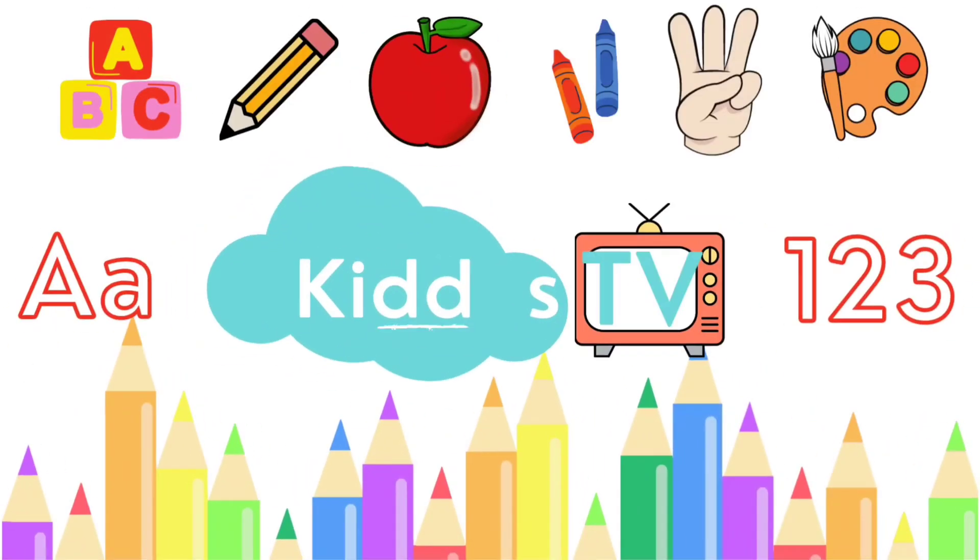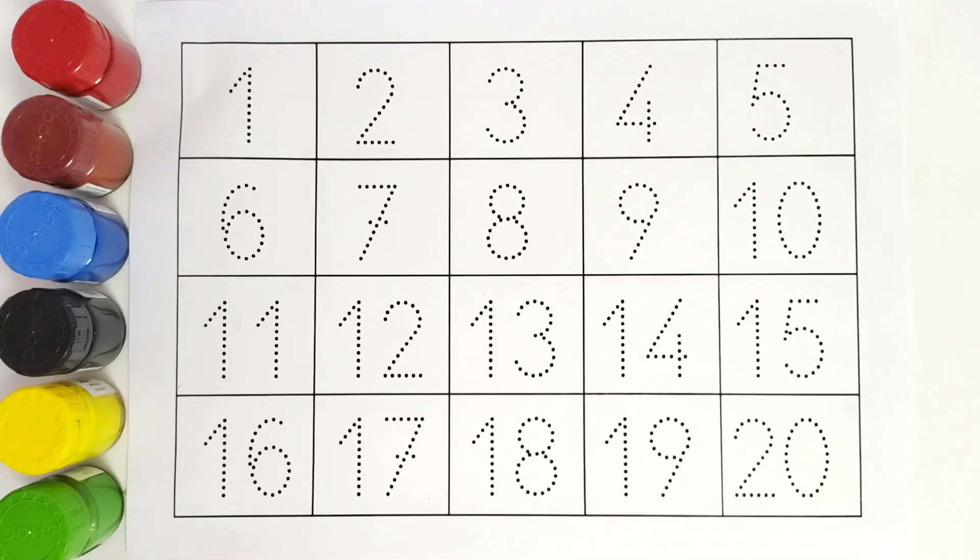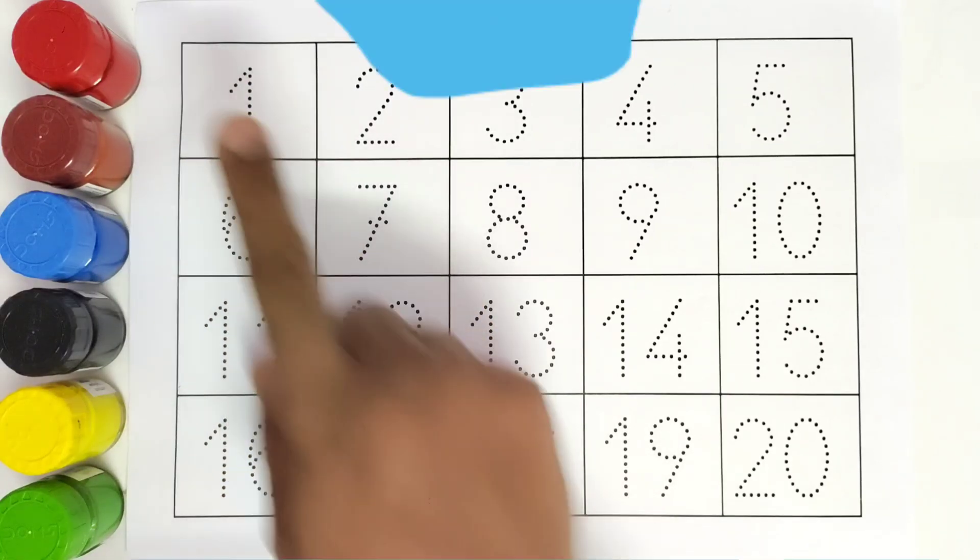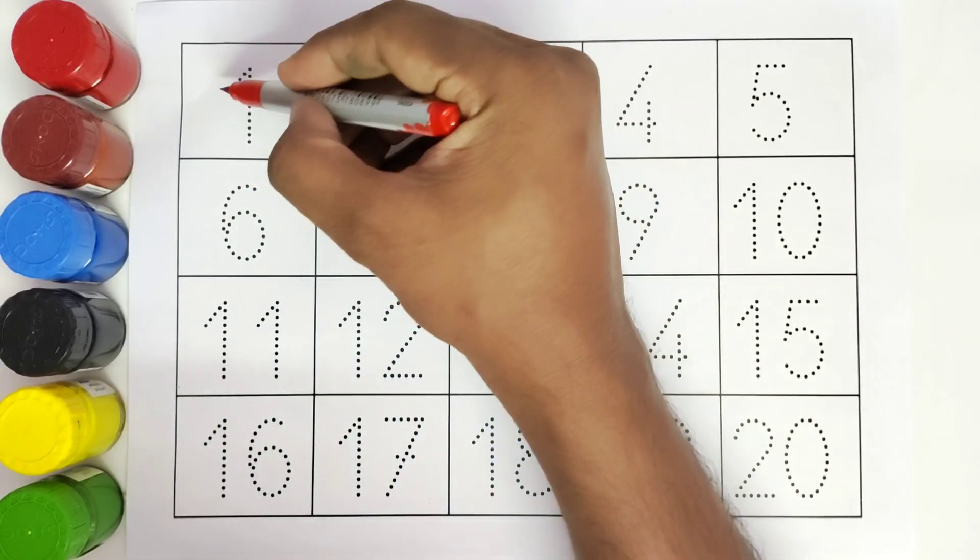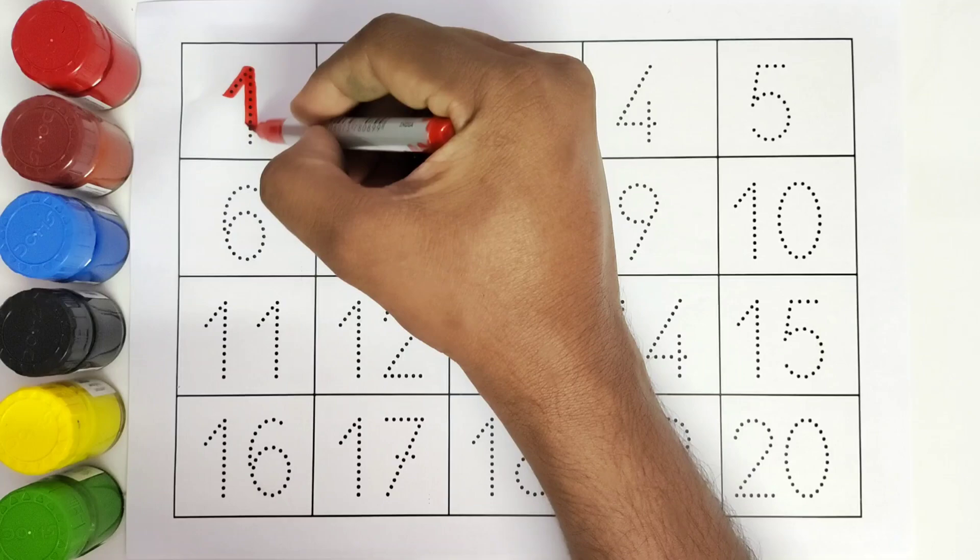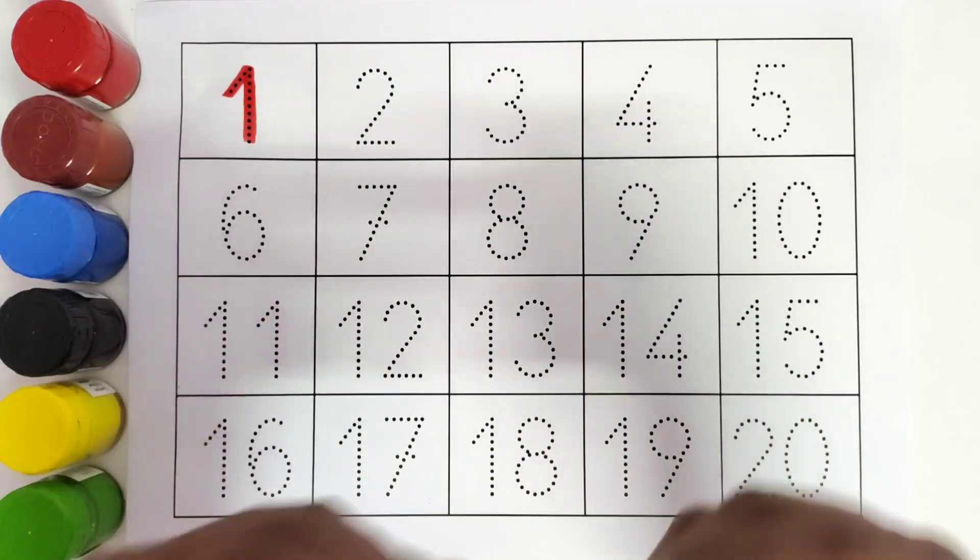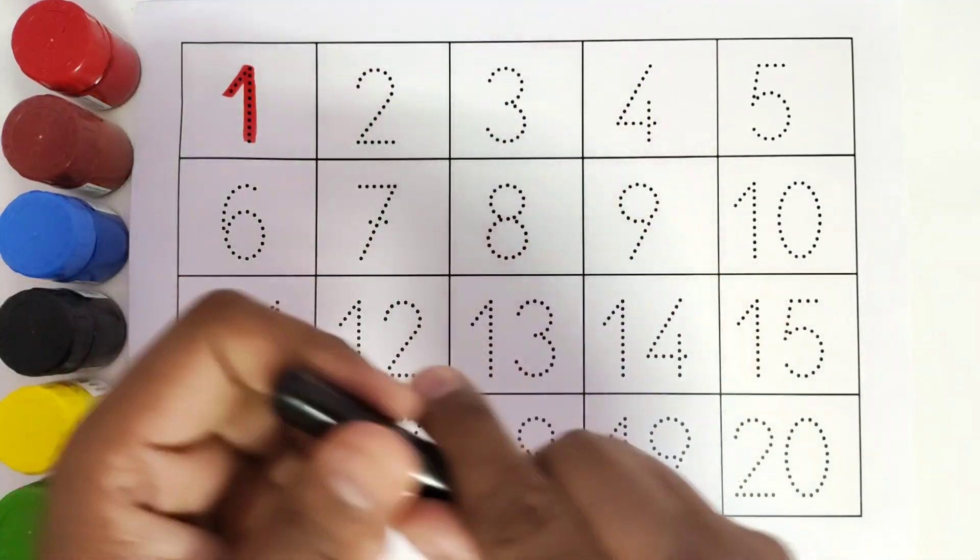Hello kids, welcome to Kiddos TV. Today we are going to learn the numbers. We will be coloring from one to twenty. This is one, number one. This is two.